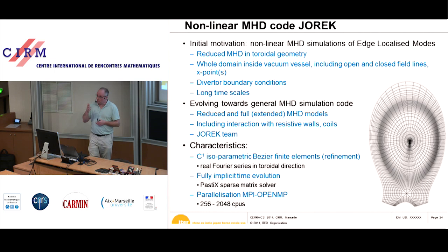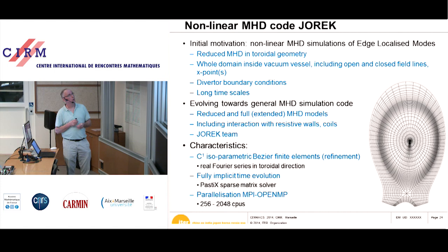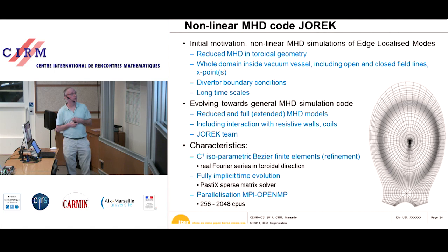JOREK was initially developed for edge-localized mode simulations, but is now becoming a more general MHD code which can study all the issues for ITER. The development has become a large team effort with people from all over Europe and now some Russian participation. The code uses Bézier finite elements — cubic C1-continuous finite elements, basically Hermite cubic finite elements allowing refinement. In the toroidal direction we use a real Fourier series, and we use a fully implicit time evolution.